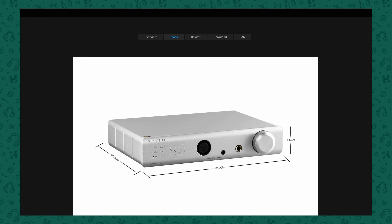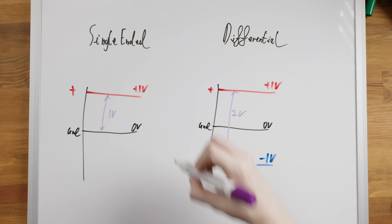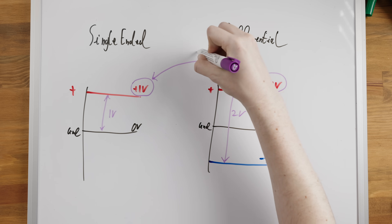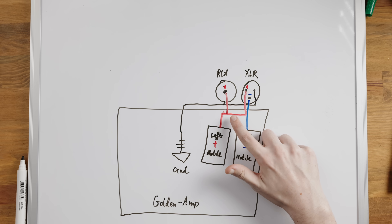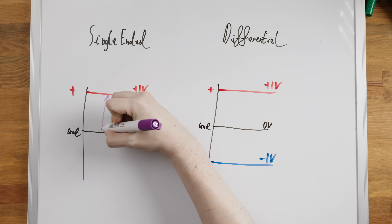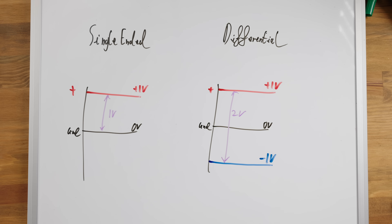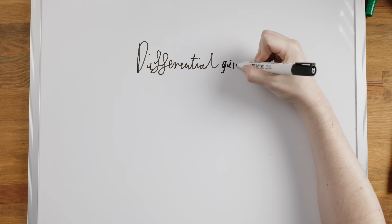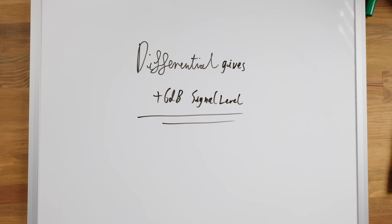This is why most balanced outputs on devices are specified to have twice the output voltage of the single-ended outputs — they are differential. It's not that any particular conductor is carrying a higher voltage; in fact the positive connection of the XLR output and the RCA output on most devices is usually shared and connected to the same circuitry. But on a single-ended connection, plus two volts relative to ground is two volts, whereas plus two volts relative to minus two volts in a differential connection is four volts of difference — giving us a higher effective signal level compared to any remaining noise, further improving the signal-to-noise ratio by about 6dB on top of the passive noise rejection benefits from the connection being balanced.